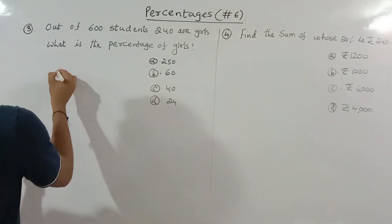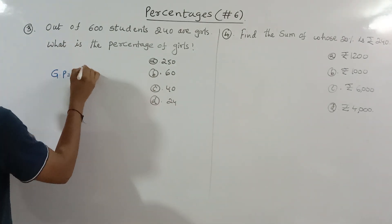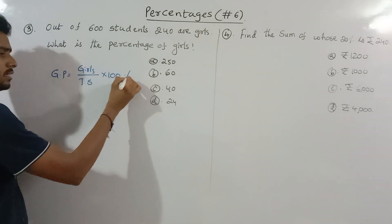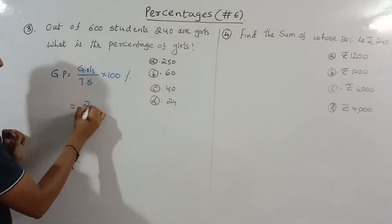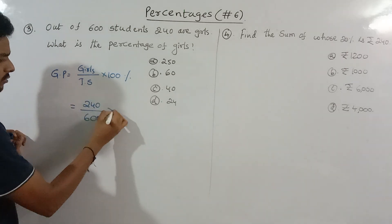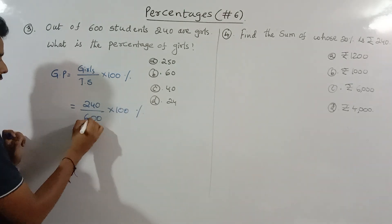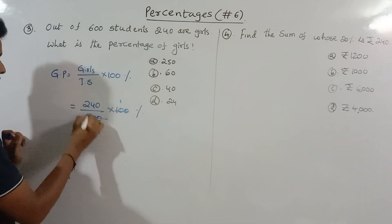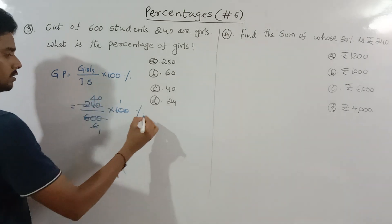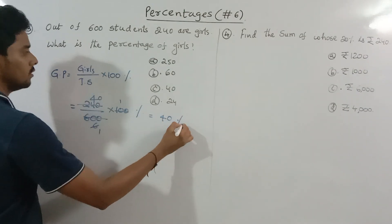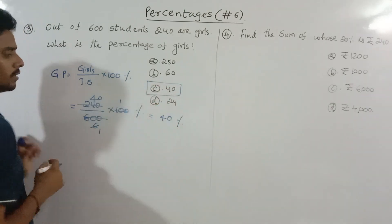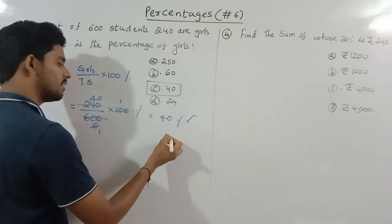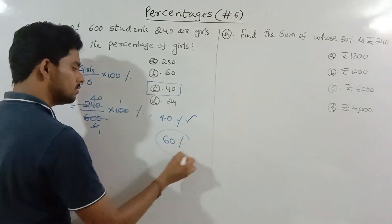Girls percentage equals number of girls divided by total strength, into 100. That is 240 divided by 600, into 100, which equals 40%. So girls are 40%. Since total is 100%, boys are 60%.